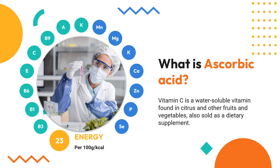Vitamin C is a water-soluble vitamin found in citrus and other fruits and vegetables, also sold as a dietary supplement and as a topical serum ingredient to treat melasma and wrinkles on the face. It is used to prevent and treat scurvy. Vitamin C was discovered in 1912, isolated in 1928, and in 1933 became the first vitamin to be chemically produced. It is on the World Health Organization's list of essential medicines.